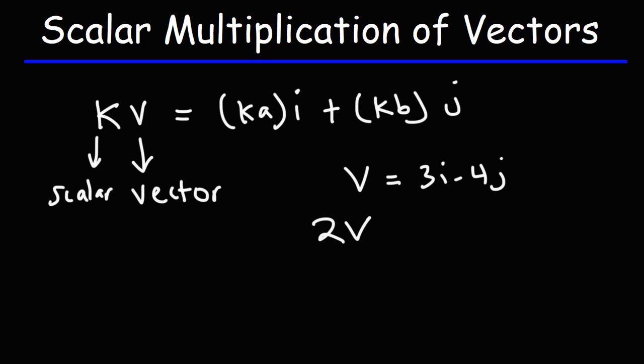If we put a 2 in front of it, we've multiplied the vector by the scalar quantity of 2. 2 is the scalar quantity. So 2V would be 2 times 3i minus 4j, which will give us 6i minus 8j. So you can multiply a vector by any number. And what's going to happen is, it's going to change the length of the vector.